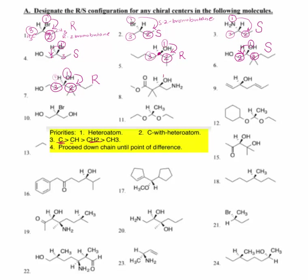Number eight: oxygen is priority number one. Here I have a carbon with a heteroatom, so number two is to the right, and then I have a carbon — this is priority number three. The number four priority is the hydrogen, and it is pushed to the rear. This rotates to the right or clockwise, so this is an R configuration.